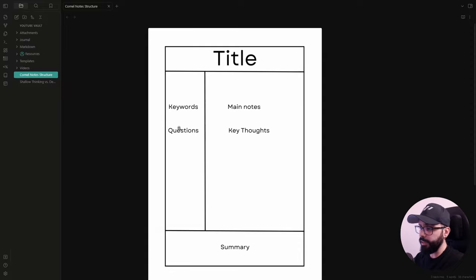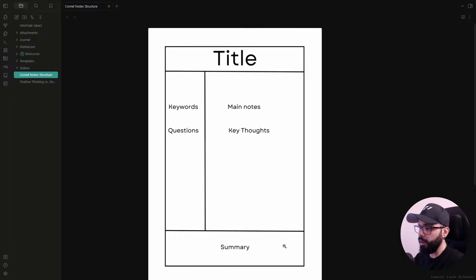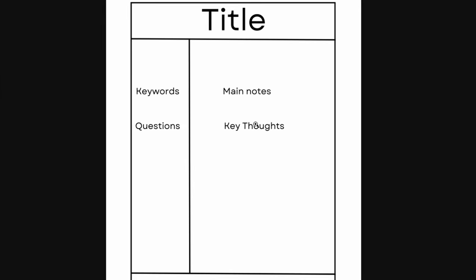As you can see, the page is divided into three main sections: a narrower left column, a wider right column, and a summary section at the bottom. The left column is for cues and questions, the right column for your notes, and the summary section for summarizing. The right-hand column is where you will write your main notes, so be sure to jot down the essential information, keywords, and concepts.